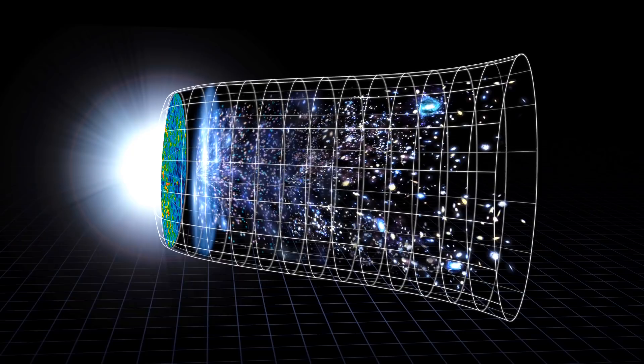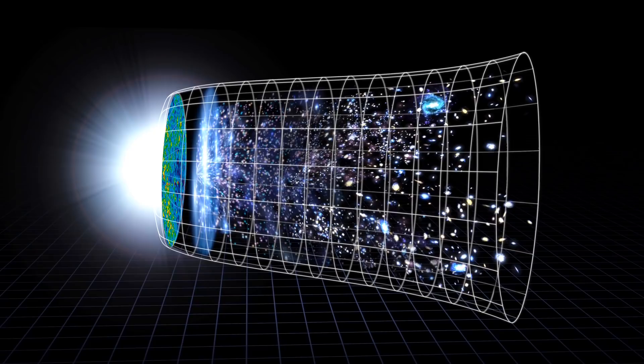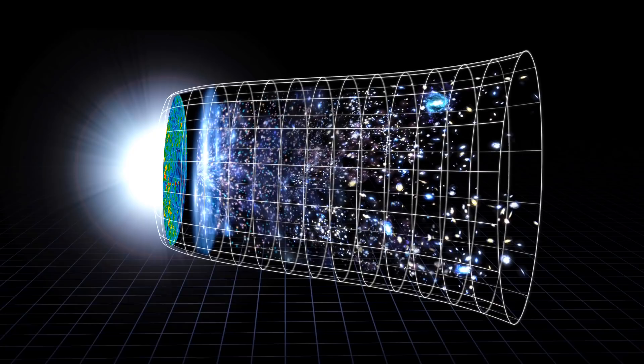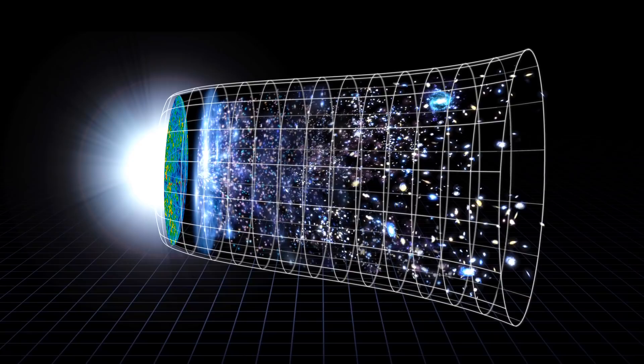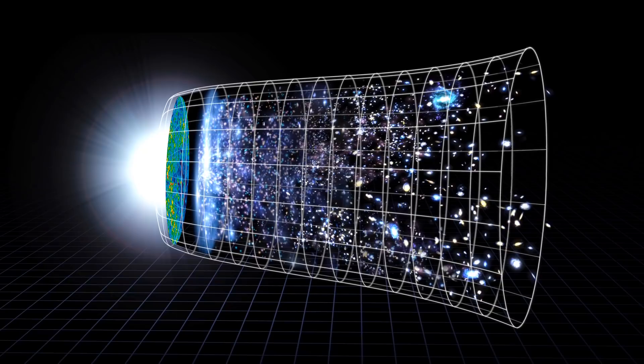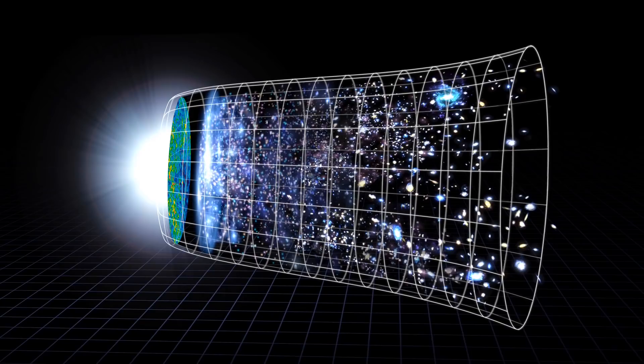We can rule out the first 300,000 years of the universe easily enough, which is handy because that's a period we cannot see, the time prior to what we call the Last Scattering. Indeed, the reason we cannot see it is the same reason we could not have had biology back then. Back then the universe hadn't expanded very much, though by this we mean our observable universe, a point that will matter later too. Since the universe was quite small, it was also ultra-hot and ultra-dense, so there was no complex chemistry going on.